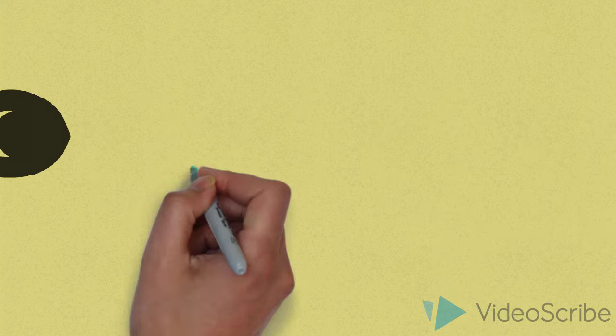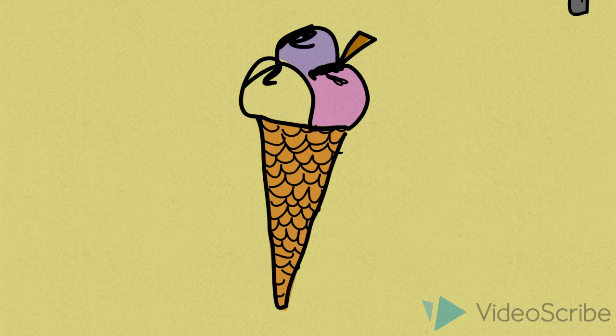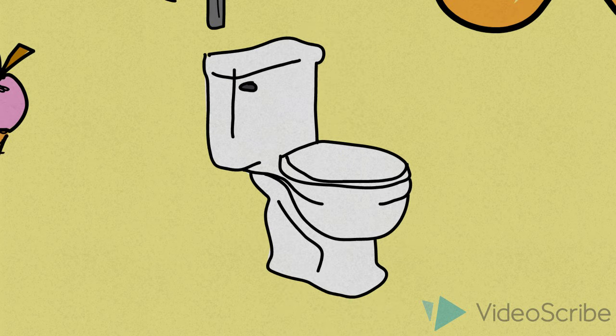Imagery. Imagery is language that appeals to the senses. There are five senses of sight, hearing, touch, taste, and smell. Description of people or objects stated in terms of our senses.